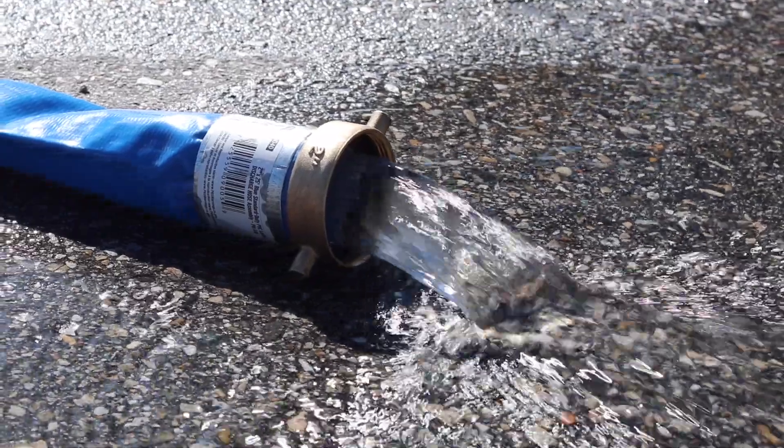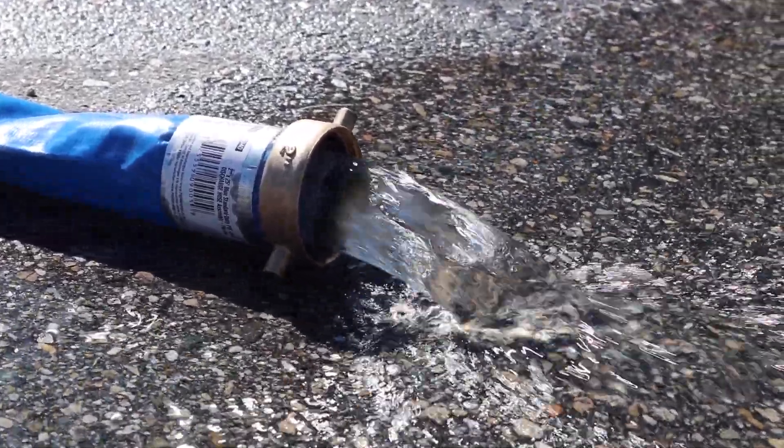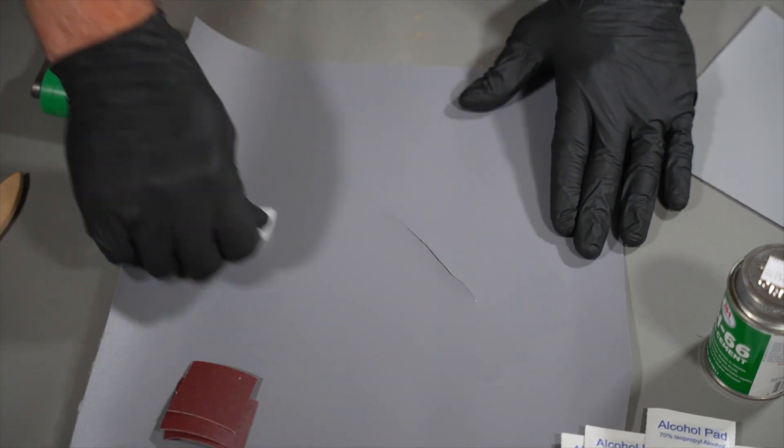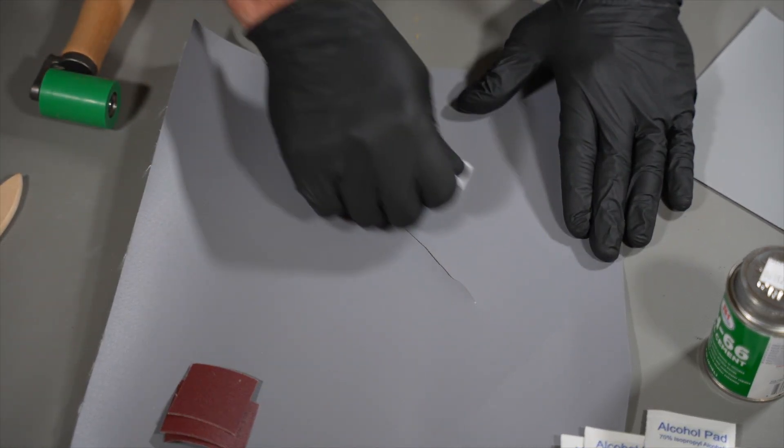To begin the repair process, drain and dry the wastewater bladder entirely. Be sure to thoroughly clean the area that is to be patched using the included alcohol pads.